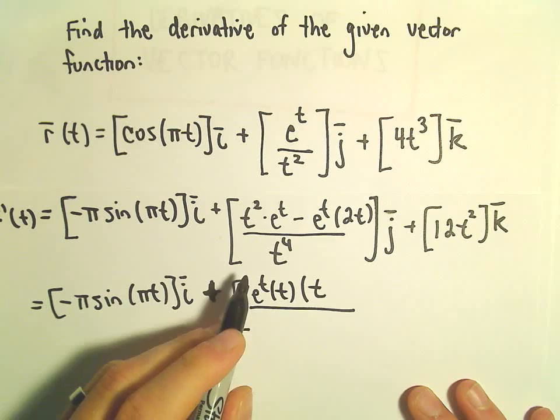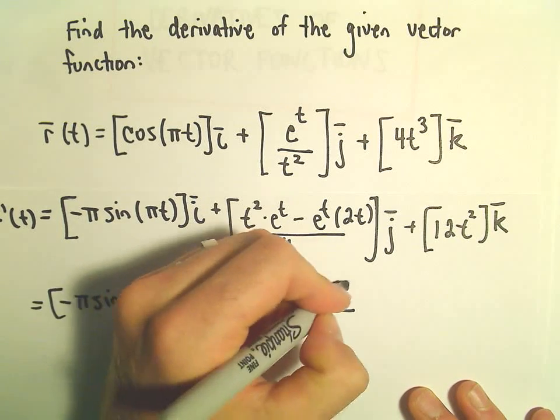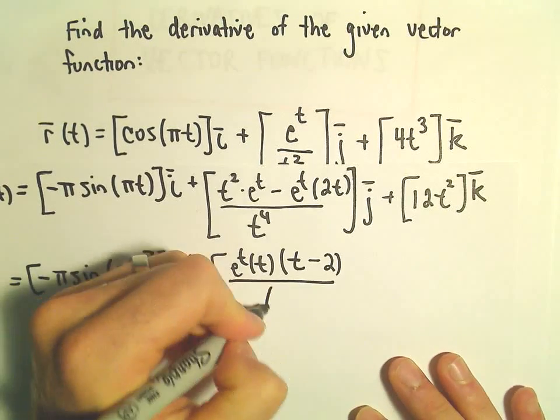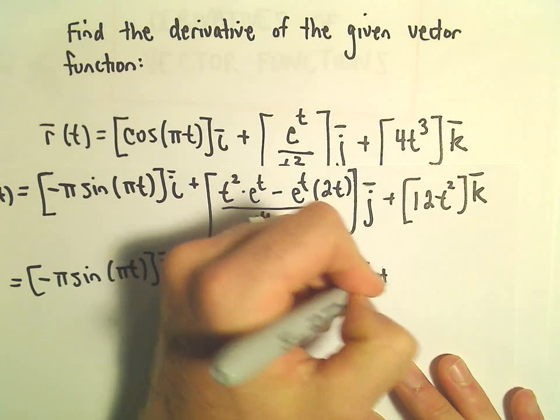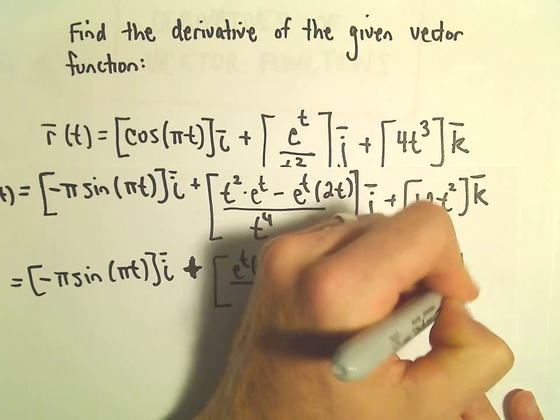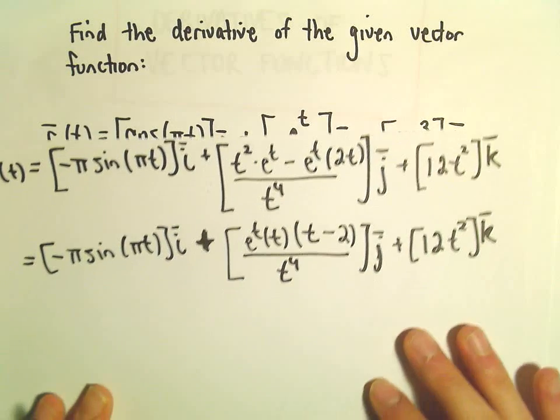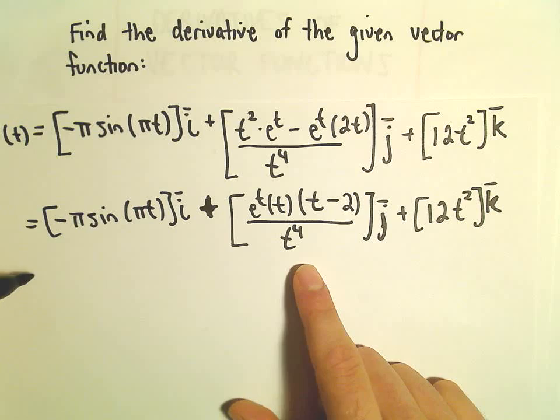And then in parentheses, we would have a t, and then I guess we would need a minus 2. And that's all over t to the fourth times j. And then our 12t squared, I'm just going to leave that alone. So the last thing I'm going to do is just simplify this part.